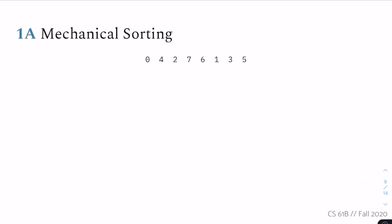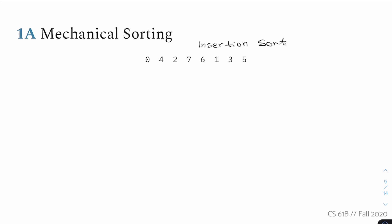That's all the material we're going to cover. This is going to be a pretty mechanical worksheet, just working through different sorts. The first sort we're going to try is insertion sort. So the first element is zero — nothing in the unsorted part yet — we just have zero, and the rest of the list is four, two, seven, six, one, three, five.